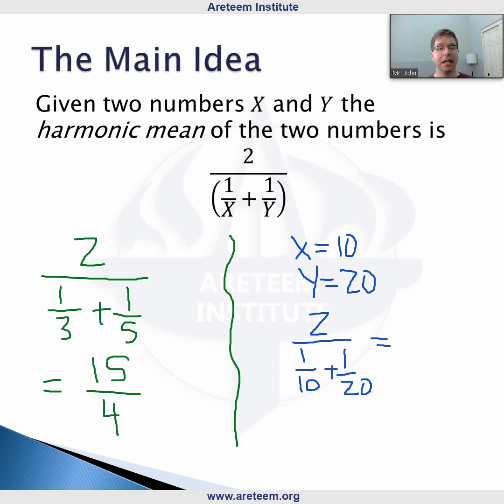And 1 tenth plus 1 twentieth, this is just 3 twentieths. And so when we simplify this, we are going to get 40 over 3. This is the harmonic mean of the two numbers x and y.